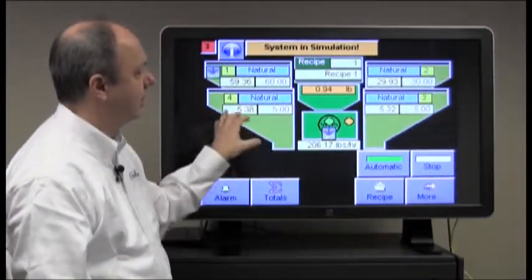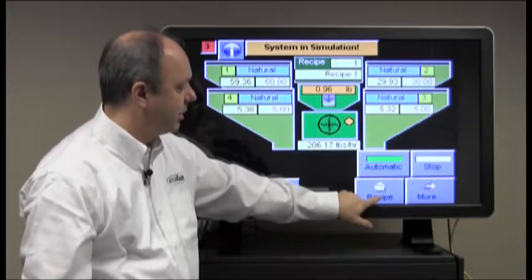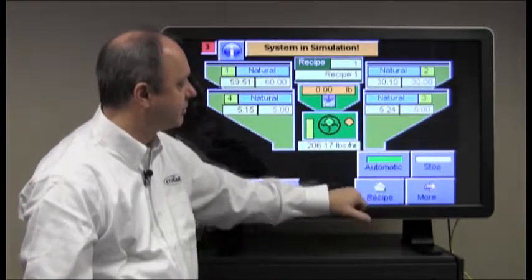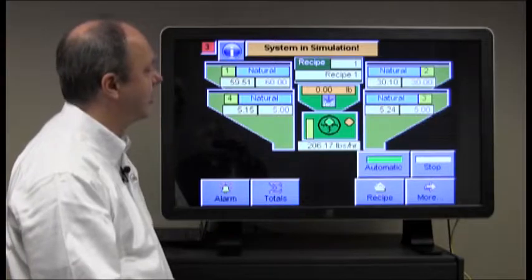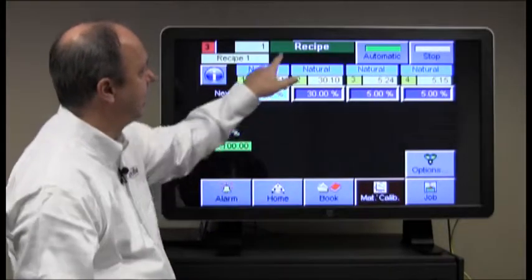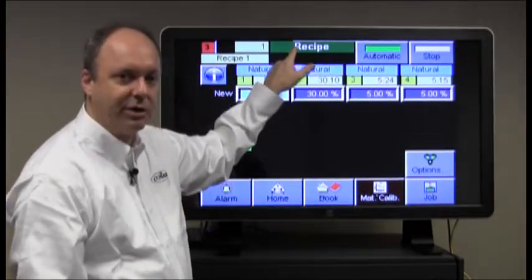So from the home screen, to change the recipe, you press the recipe button here, and it brings up the recipe screen, which is indicated here at the top of the screen. It tells you what screen you're on.